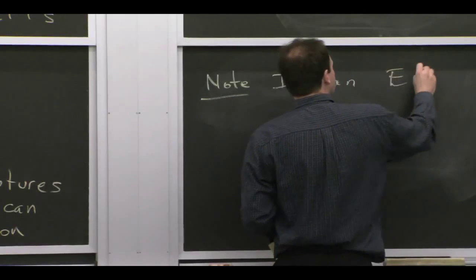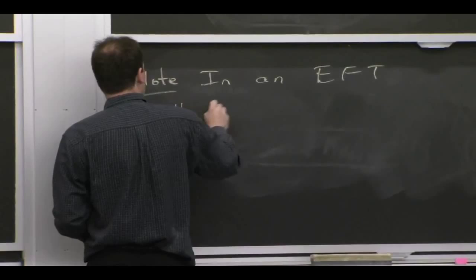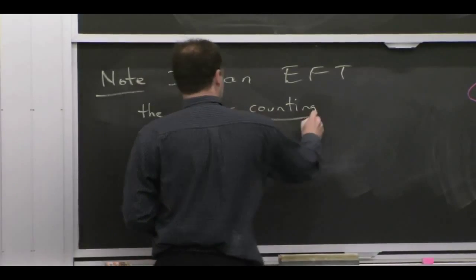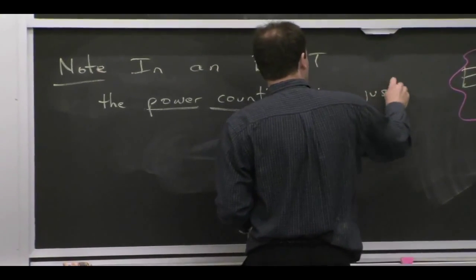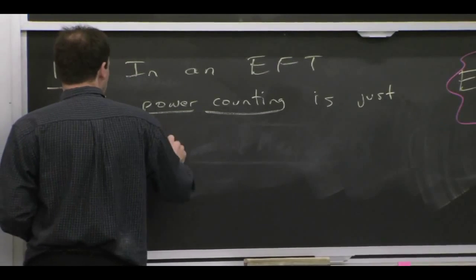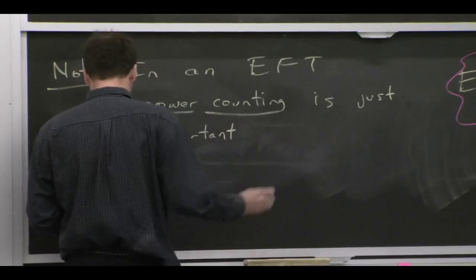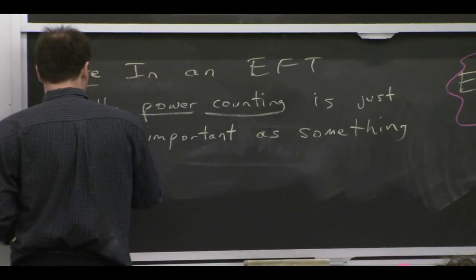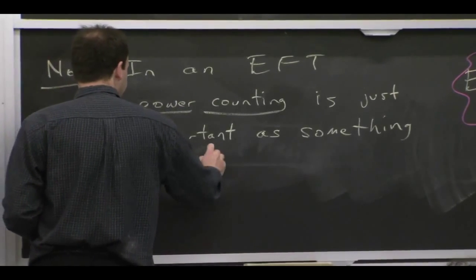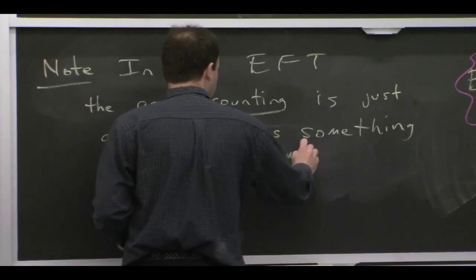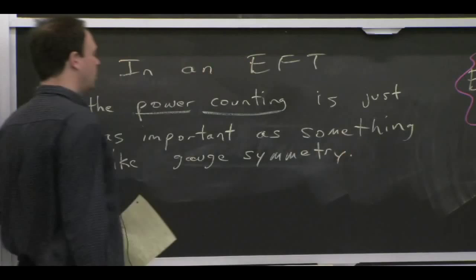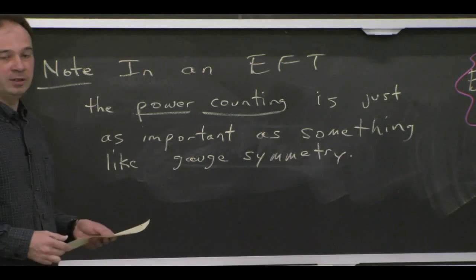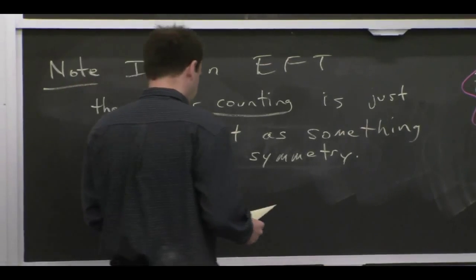So in effective field theory, power counting is just as important as figuring out things like symmetries. And in particular, just to make it sort of clear that it's important, I'll compare it to gauge symmetry. It's really a fundamental ingredient in what you're doing and in the whole theory. Because the power counting being consistent is actually necessary for the whole field theory, effective field theory, to make sense.